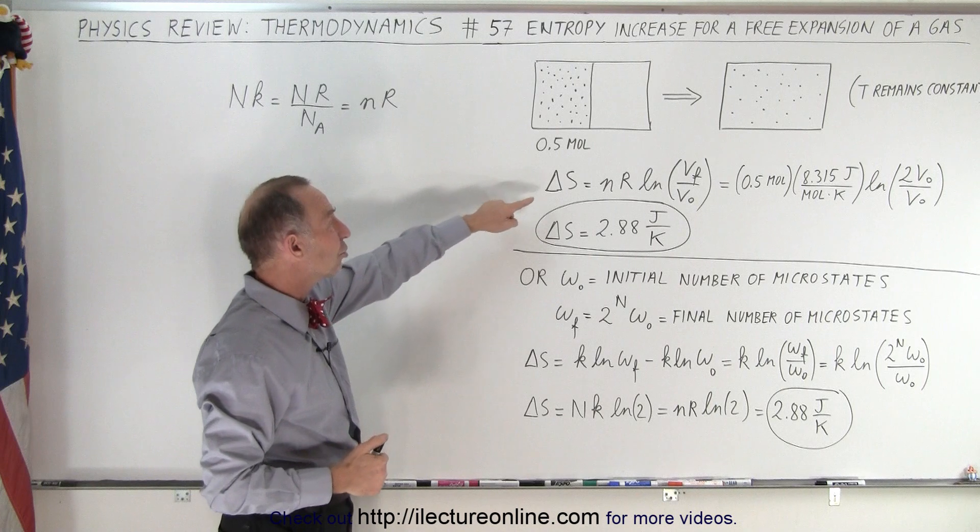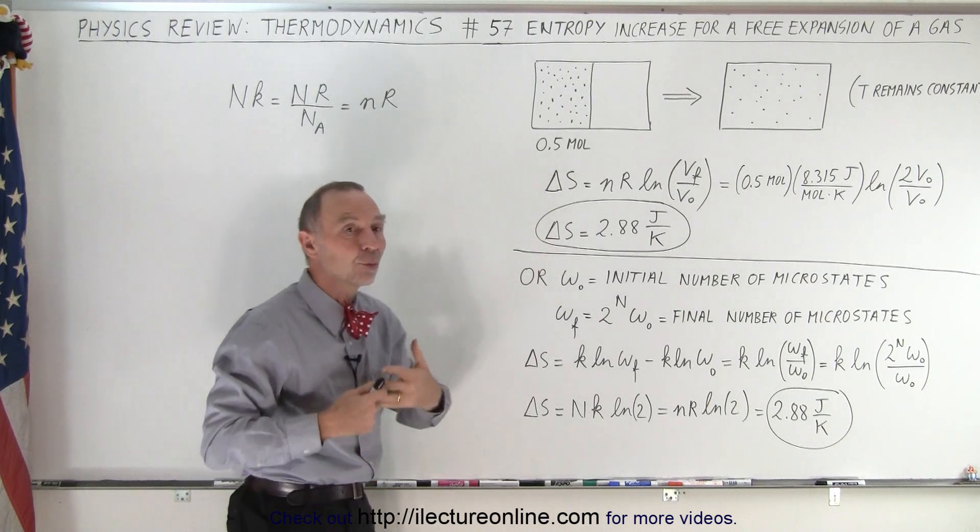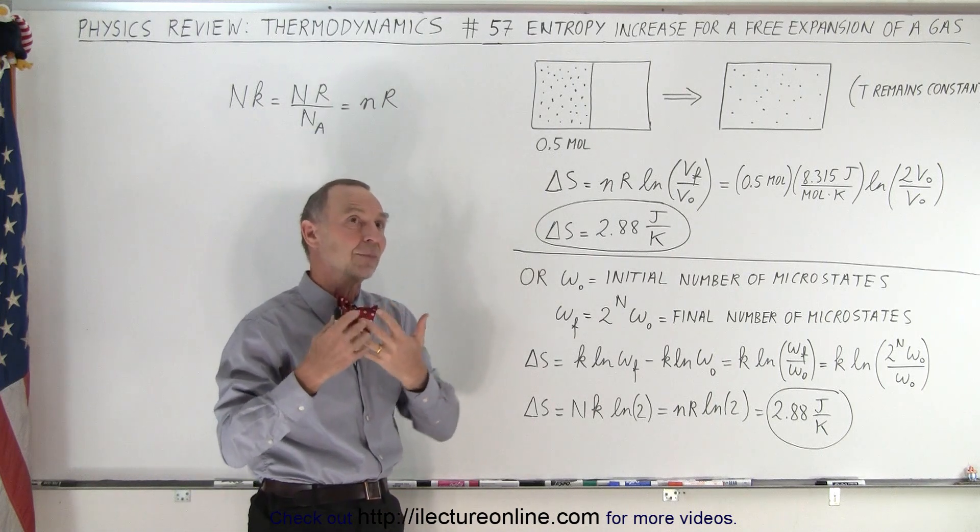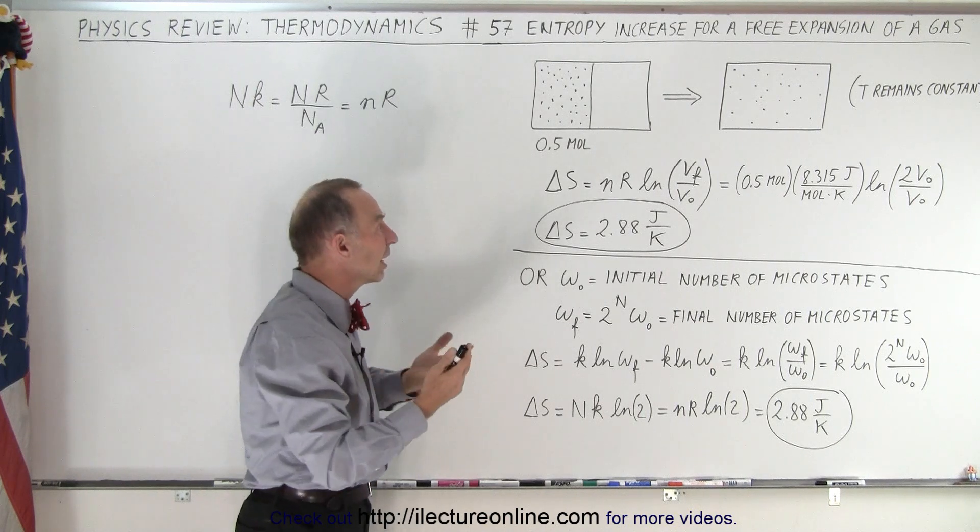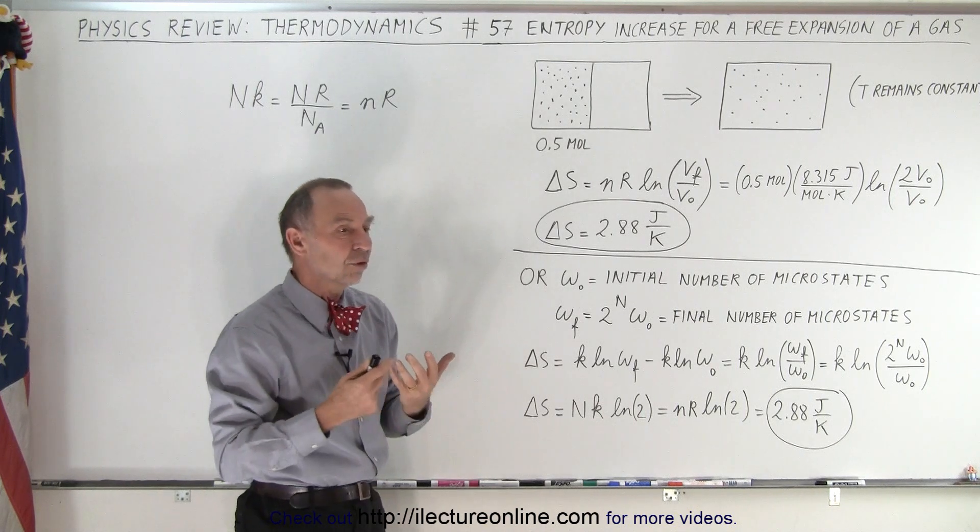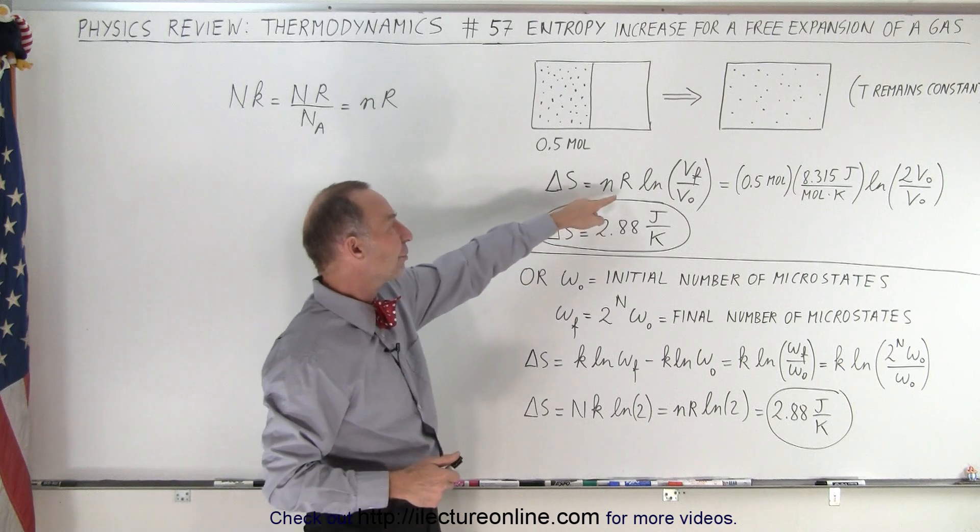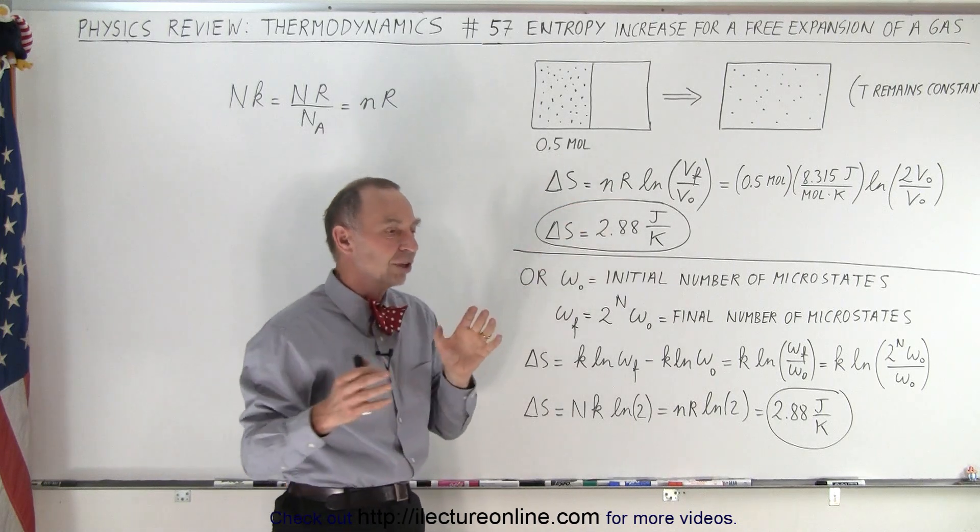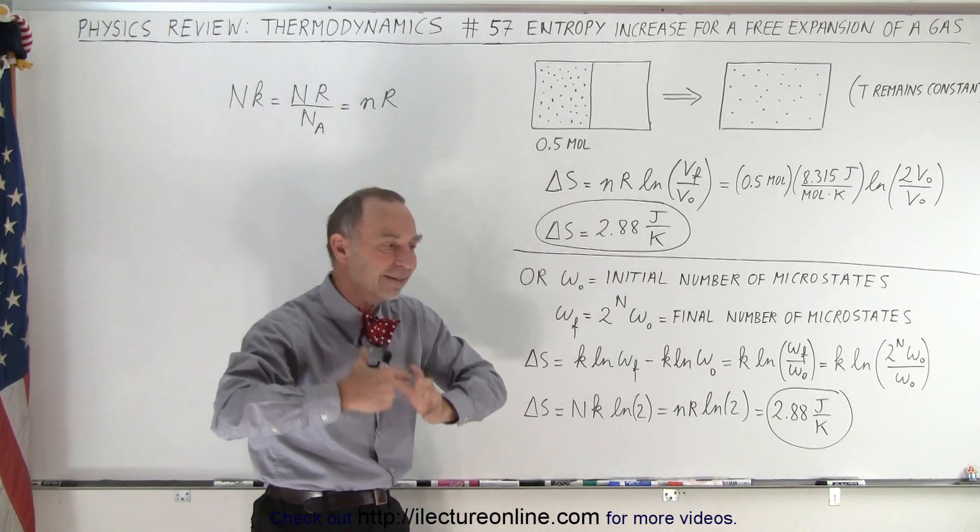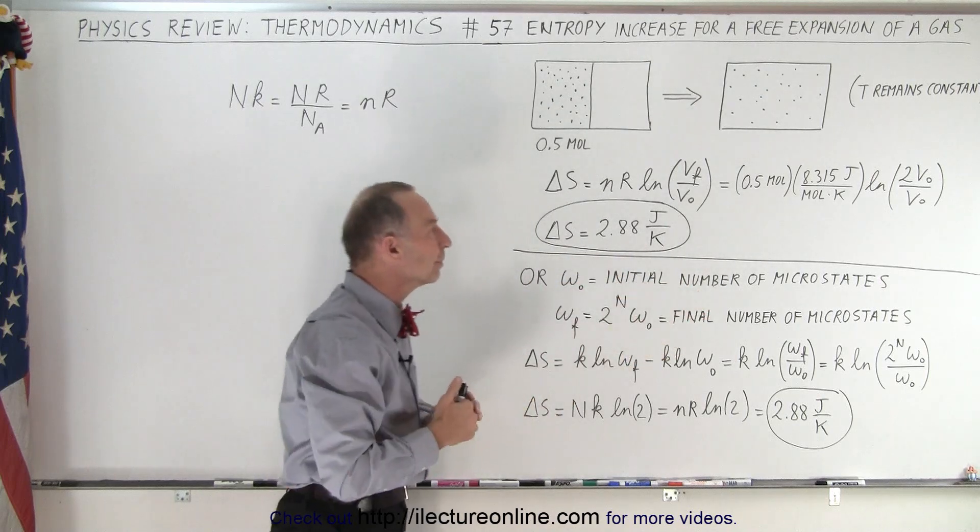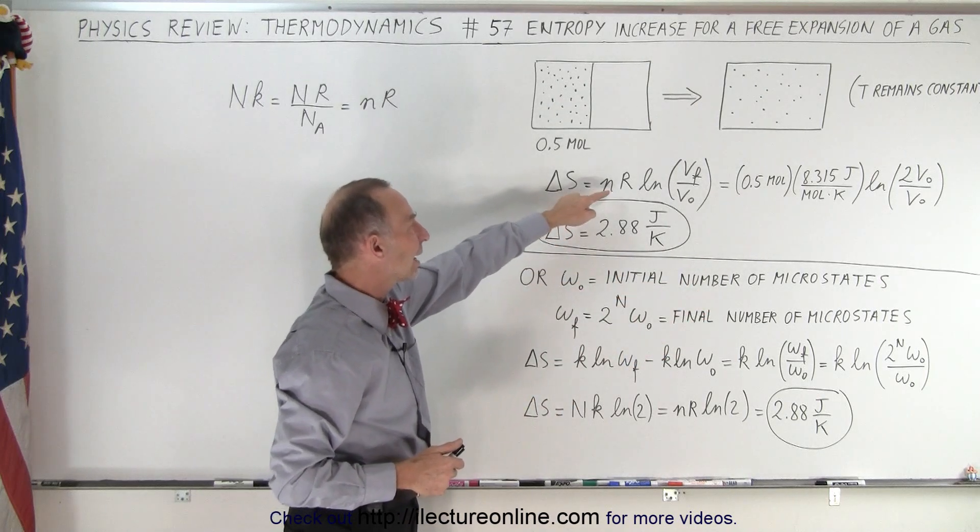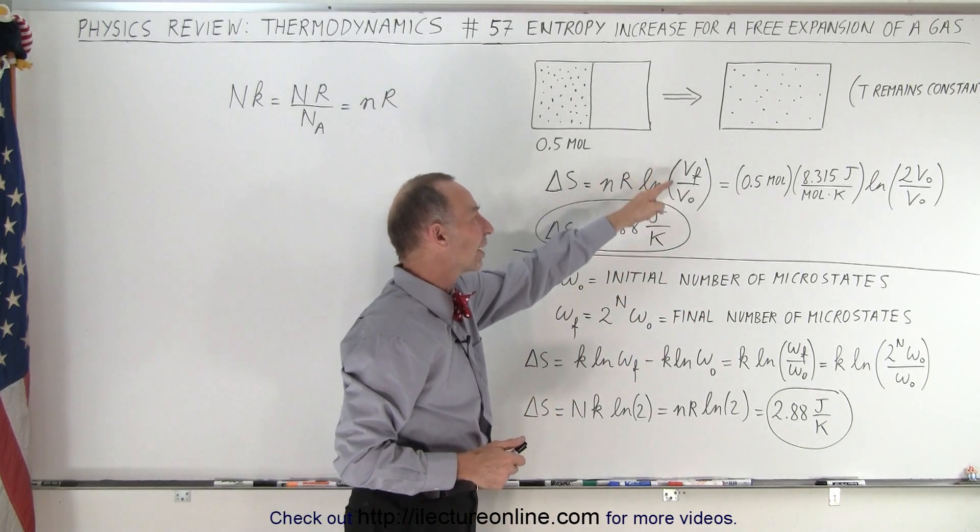So we can calculate the change in entropy. Well actually not how much work is done, but how much energy has been added. So essentially we use the equation for doing work but it comes from the gas itself expanding into the bigger volume and so that becomes N times R times the natural log of V final over V initial.